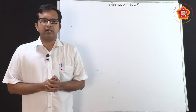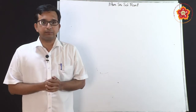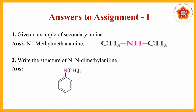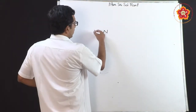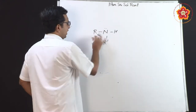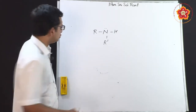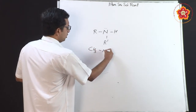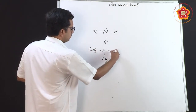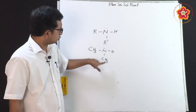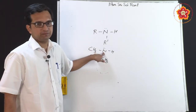Before going to that, let us see the answers for the assignment questions given in the earlier class. The first question asked for an example of a secondary amine. A secondary amine has nitrogen with two R groups — if two alkyl groups are present it is called a secondary amine. You can replace with two CH3 groups; you can name this as methyl methanamine.